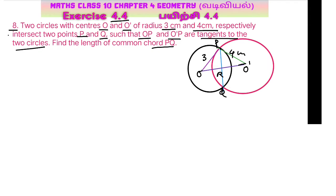Radius and tangent are perpendicular. In right triangle OPO', angle OPO' equals 90 degrees. So by Pythagoras theorem...